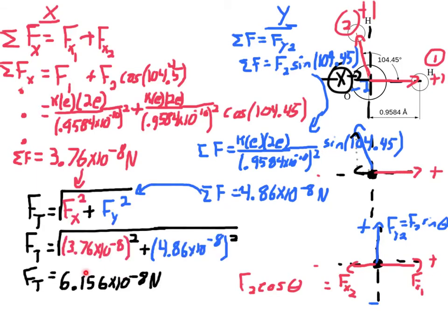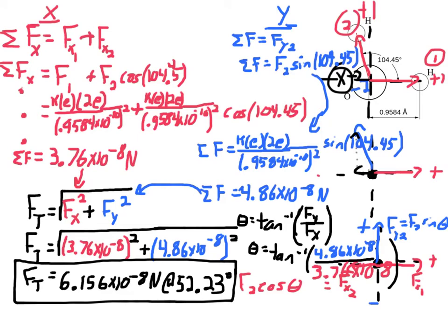Now I have the magnitude of the resultant force: 6.156 × 10⁻⁸ newtons, using four sig figs because the only thing factoring into significant figures is the distance between them — we treat the electron charge values as exact. For the angle: inverse tangent of y total over x total gives 52.23 degrees. This is just adding vectors — please don't freak out. The only difference is I didn't know the forces at first; I used Coulomb's Law to find them, then went through the normal process: add x's, add y's, Pythagorean theorem, inverse tangent.